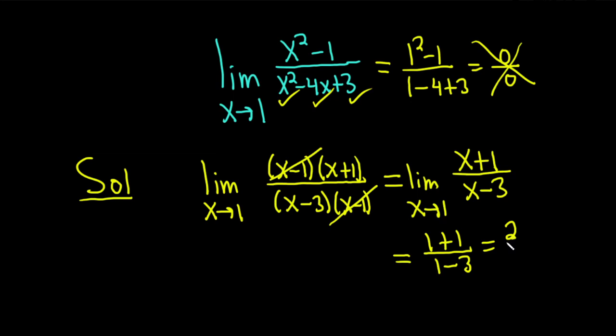1 plus 1 is 2, and then 1 minus 3 is minus 2. These cancel, and so you get minus 1. And that would be the limit in this particular problem.